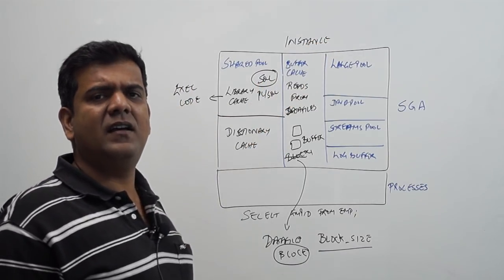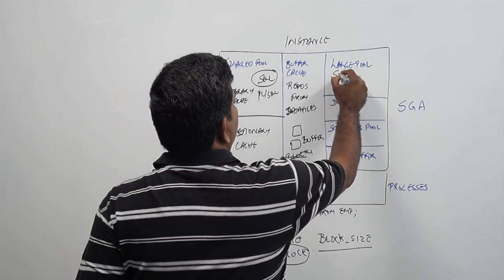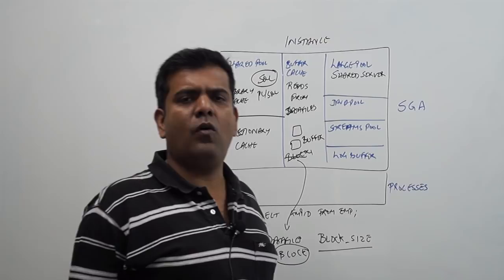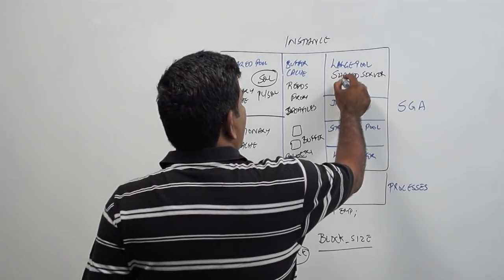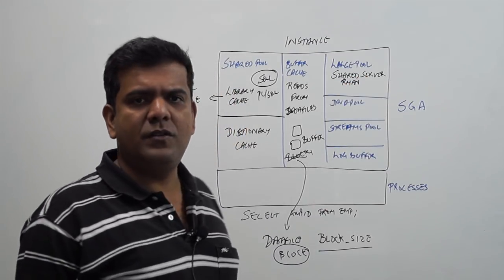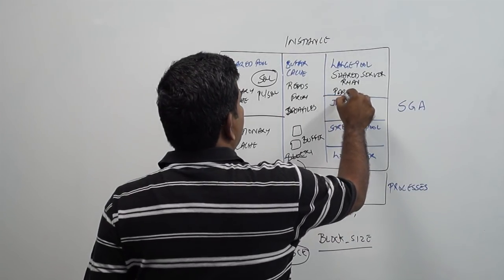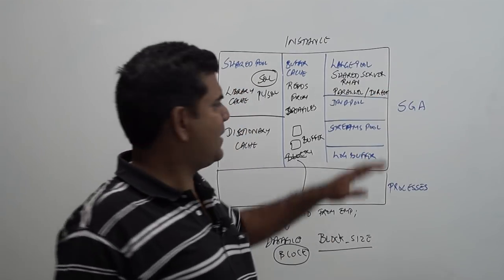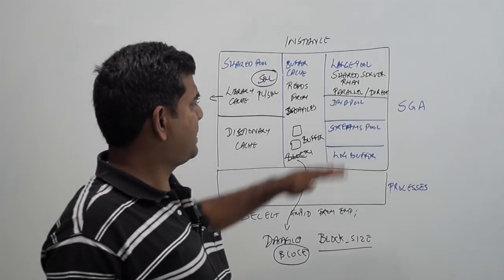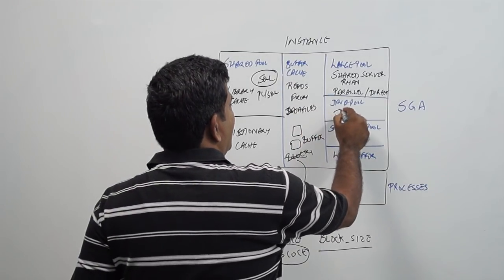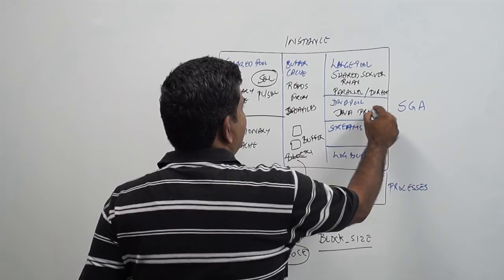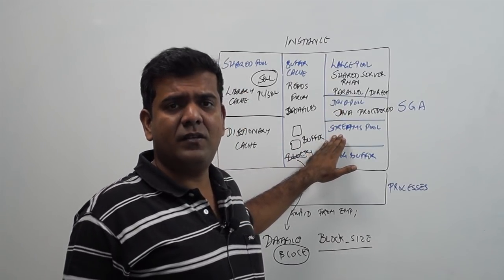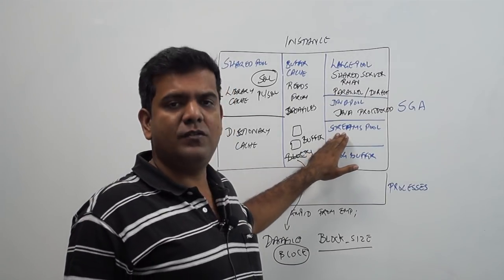Large pool has specific purposes. Number one, if you set up what is called as shared server mode of database processing, it comes into use. In order to take backups with RMAN, large pool is come into use. If you do parallel query and result in doing direct IO and parallel processing might use some large pool as such. Java pool, if you store Java procedures within the database, then it makes use of Java pool. If you use streams, a means of replicating between Oracle databases, streams pool is going to put to use.